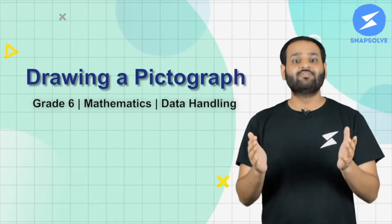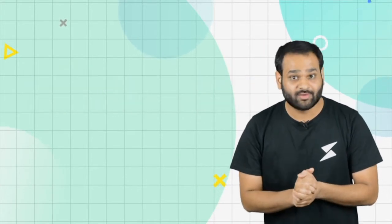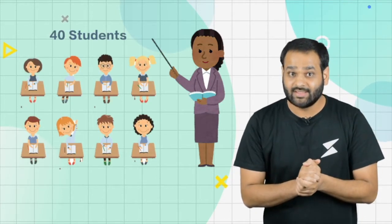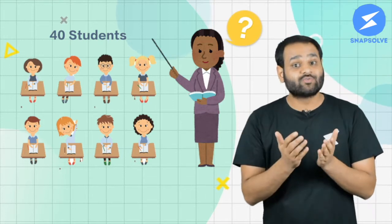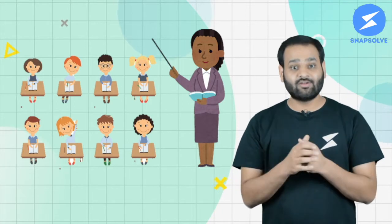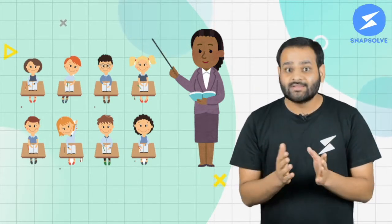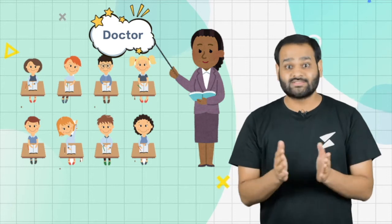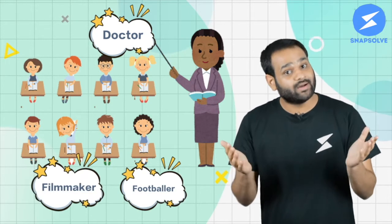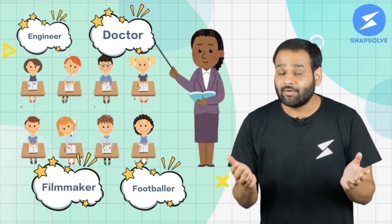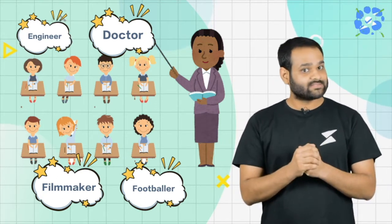In this video we will study how to draw a pictograph. The class teacher Mrs. Matthew has 40 students in her class. The teacher is curious what students would like to become when they grow up, so she conducts a quick survey to collect the data. Students started thinking, and after a lot of thinking they shared their answers — some want to be doctors, some footballers, some filmmakers, some engineers — and a lot of information starts coming from all corners of the class.